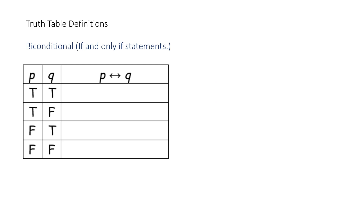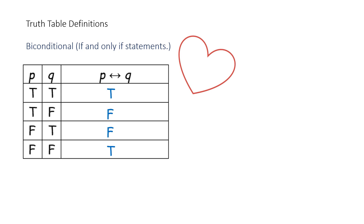The next truth table definition is the biconditional: if and only if statements. Again, we start the truth table with P and Q. Under P: T, T, F, F. Under Q: T, F, T, F. P double-sided arrow Q is read 'P if and only if Q.' By definition: T if and only if T is true; T if and only if F is false; F if and only if T is also false; and F if and only if F is true. Memorize this as well.